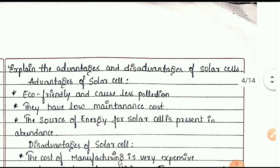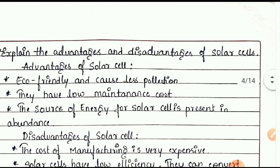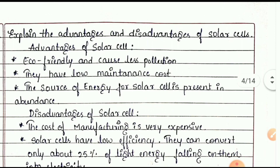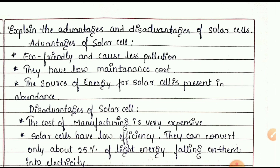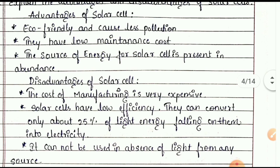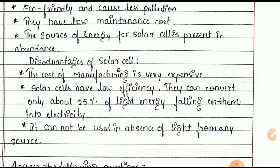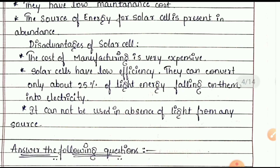Explain the advantages and disadvantages of solar cells. Advantages: they are eco-friendly and cause less pollution, have low maintenance cost, and the energy source is available in abundance. Disadvantages: the cost of manufacturing is very expensive, solar cells have low efficiency — they convert only about 25% of light energy into electricity, and cannot be used in the absence of light.